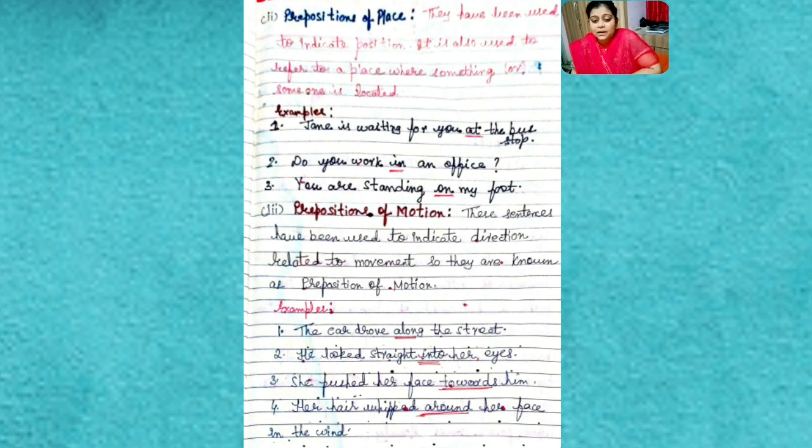Where? Jane is waiting for me at the bus stop. So whenever you use a bus stop or any other thing, we use a preposition 'at.' Do you work in an office? Do you work in an office? If I will say, do you work on office?